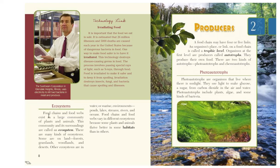What is an ecosystem? Food chains and food webs exist in a large community of plants and animals. This community and its surroundings are called an ecosystem. There are many kinds of ecosystems. Some are on land — forests, grasslands, woodlands, and deserts. Other ecosystems are in water or marine environments — ponds, lakes, streams, rivers, and oceans. Food chains and food webs vary in different ecosystems because some plants and animals thrive better in certain habitats than in others.